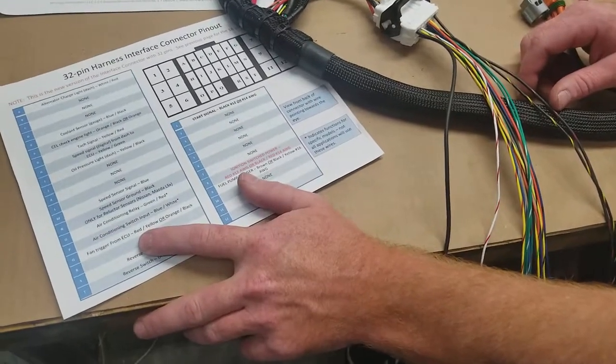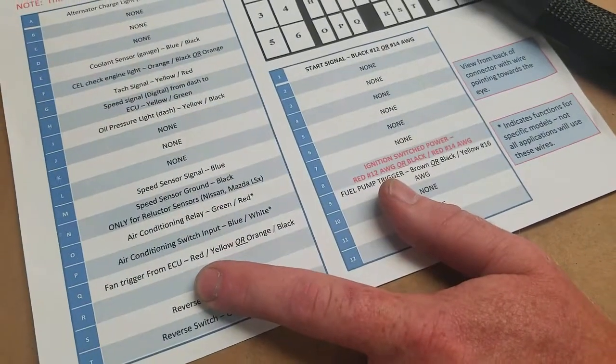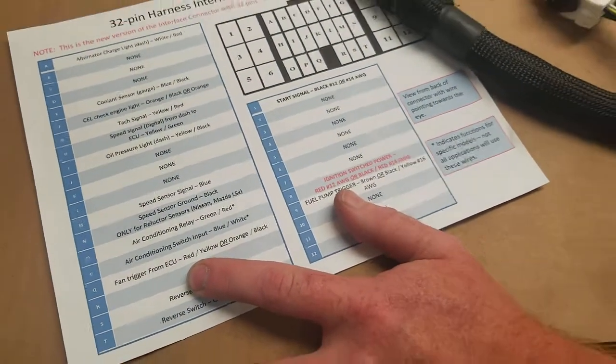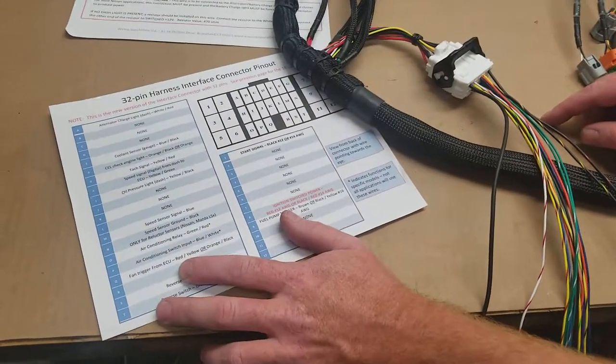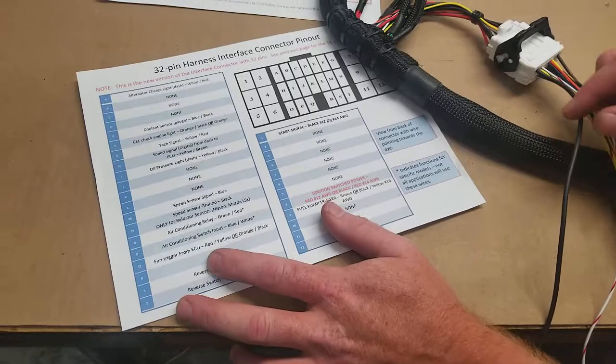The fan trigger is going to be very similar to your air conditioning relay and your fuel pump. It's also going to be a switched ground that's going to turn a relay on. You're not going to wire it directly to your fan. Bad things will happen for sure.